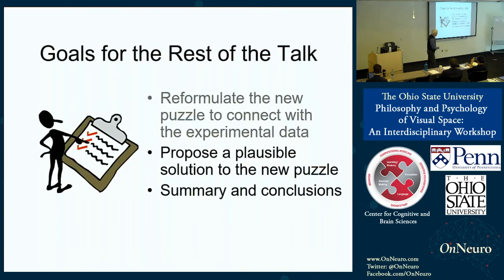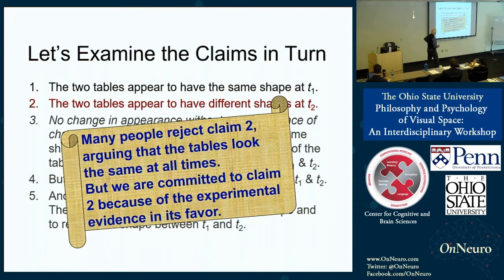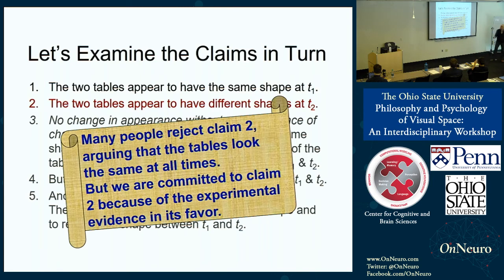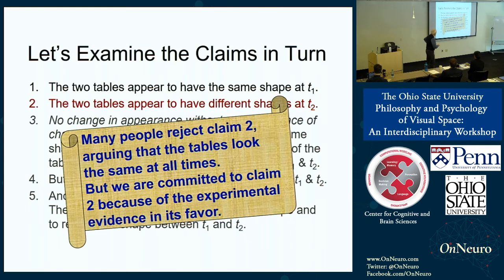Something has to give. Examining these claims in turn: claim one seems very solid — two identical tables at identical distances. Many people reject claim two — denying that when viewing distances are different, the tables appear to have a different shape. But we are committed to that claim because of our experimental evidence. Introspectively, few philosophers were willing to go that route, but if you actually measure things carefully, there's no hiding that fact.